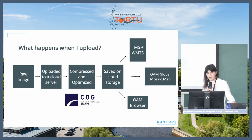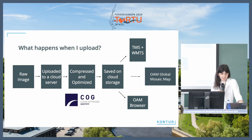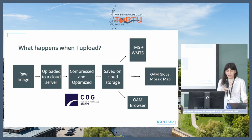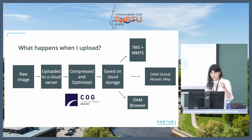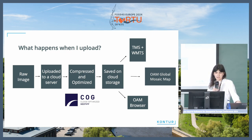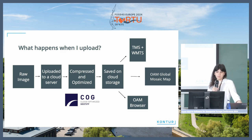From the technical standpoint, the magic that happens under the hood is that a raw image uploaded to a cloud server undergoes compression and is transformed into Cloud Optimized GeoTIFFs, or COGs. They remain in this format on the cloud and can be accessed as a TMS layer on the OAM platform, and also as part of the global mosaic map.